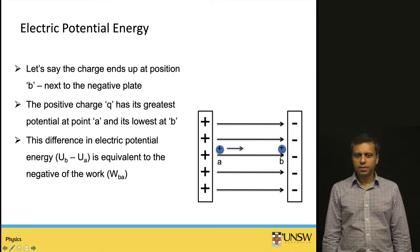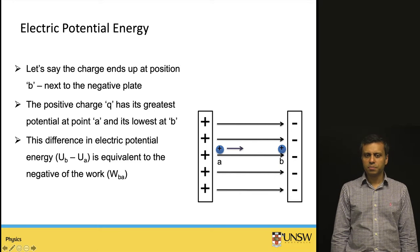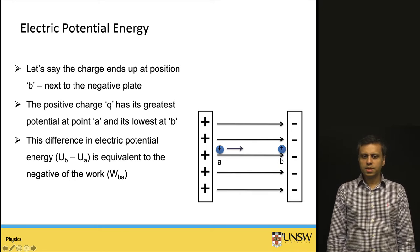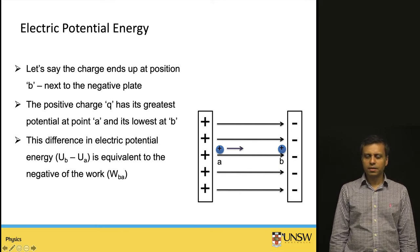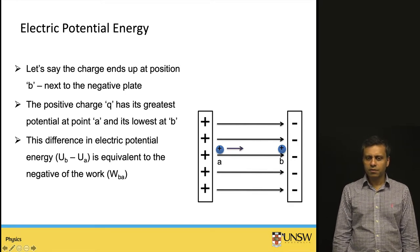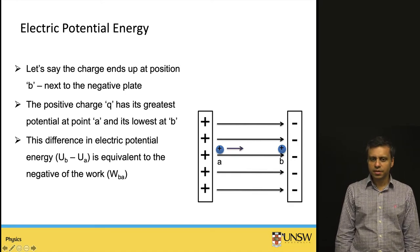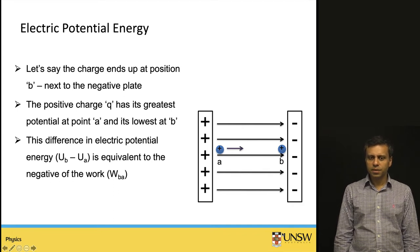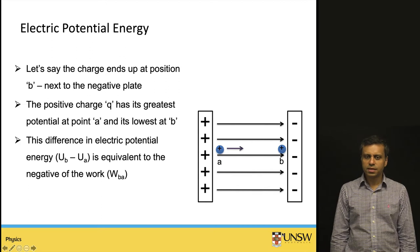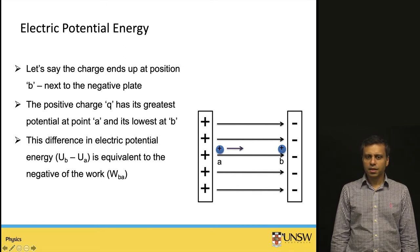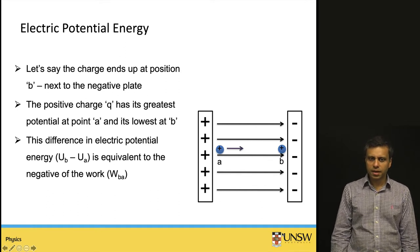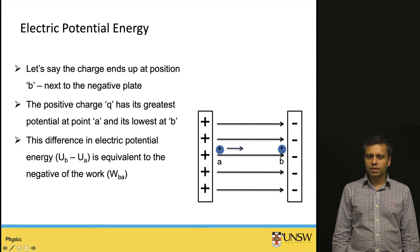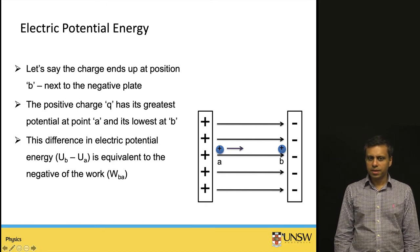Now assume the particle has moved from position A to position B. At position A the potential energy was U_A, but having moved closer to the negative plate, its potential energy has decreased to U_B. The potential energy difference is U_A minus U_B. This energy is lost as kinetic energy, and is also equivalent to the negative of the work done in moving the object from point B to point A.